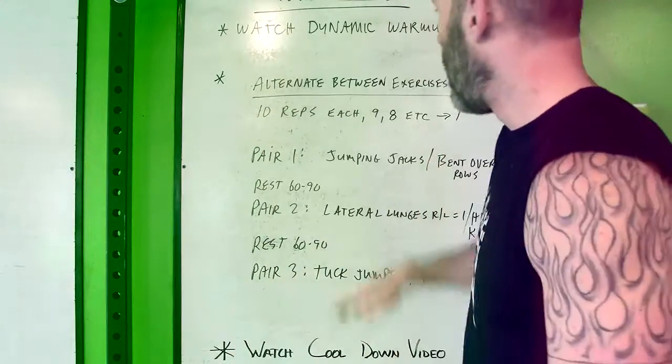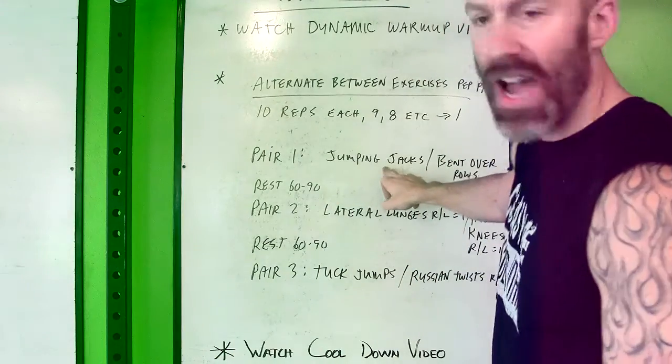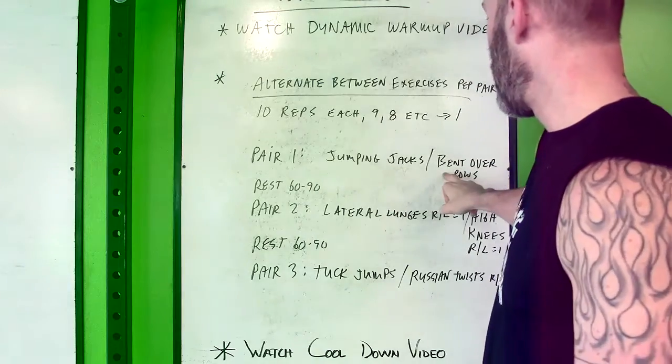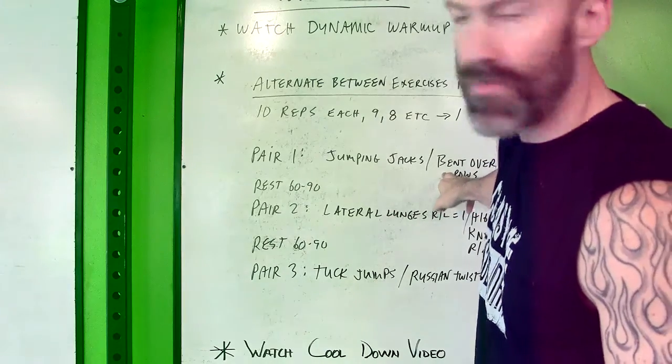Our first pairing is jumping jacks and the pair is bent over rows. Anything where there's two limbs, each limb movement counts as one rep.